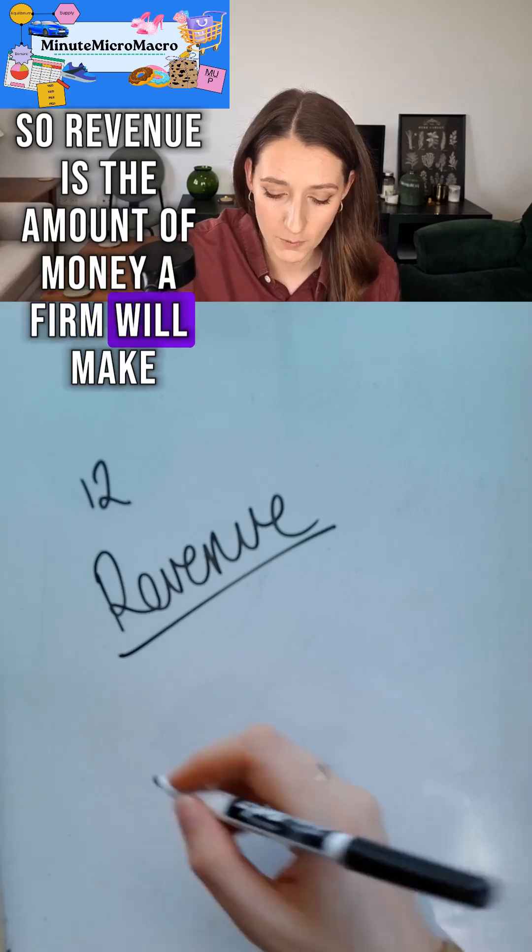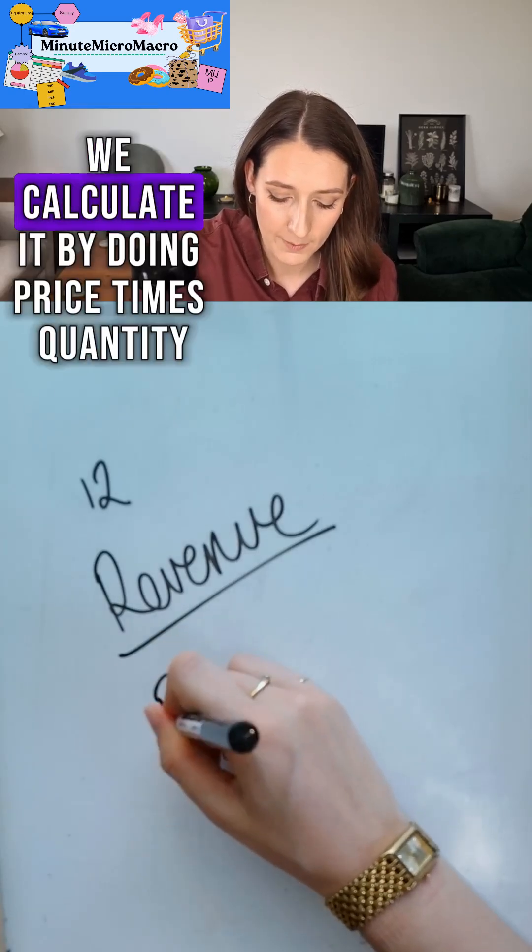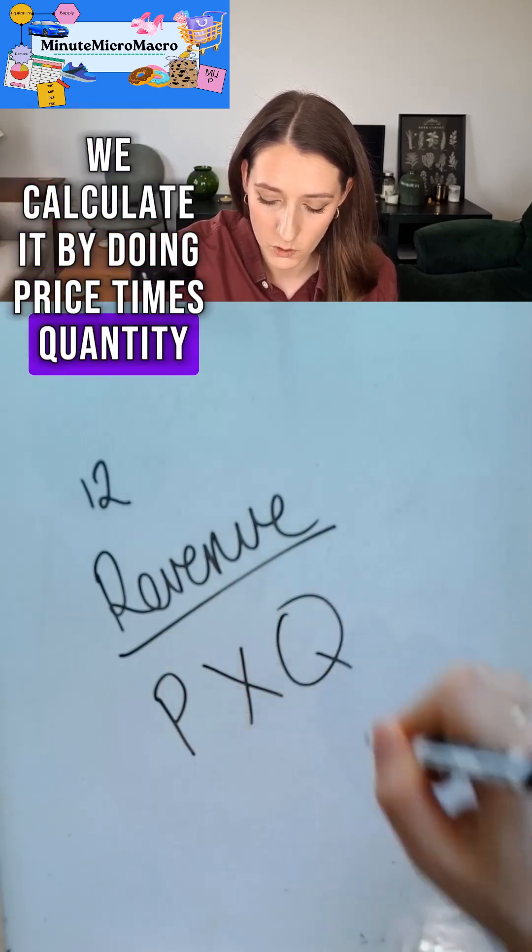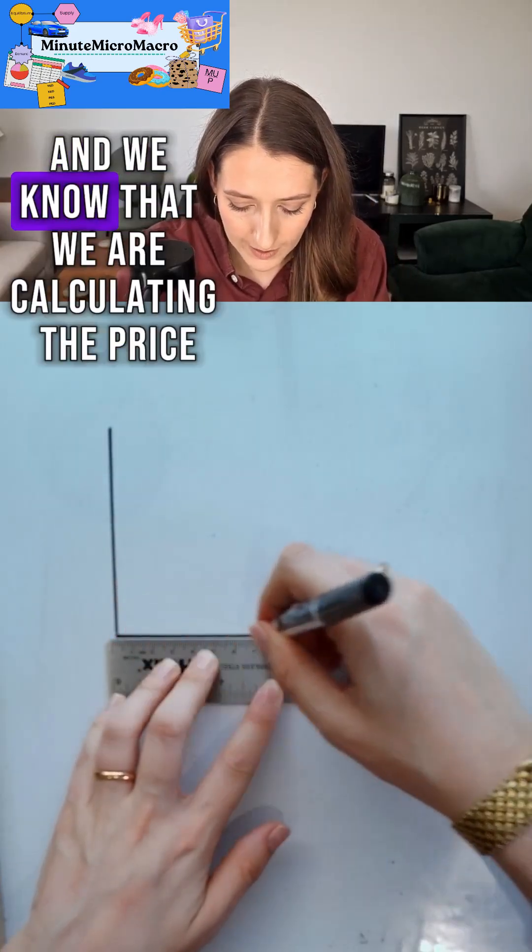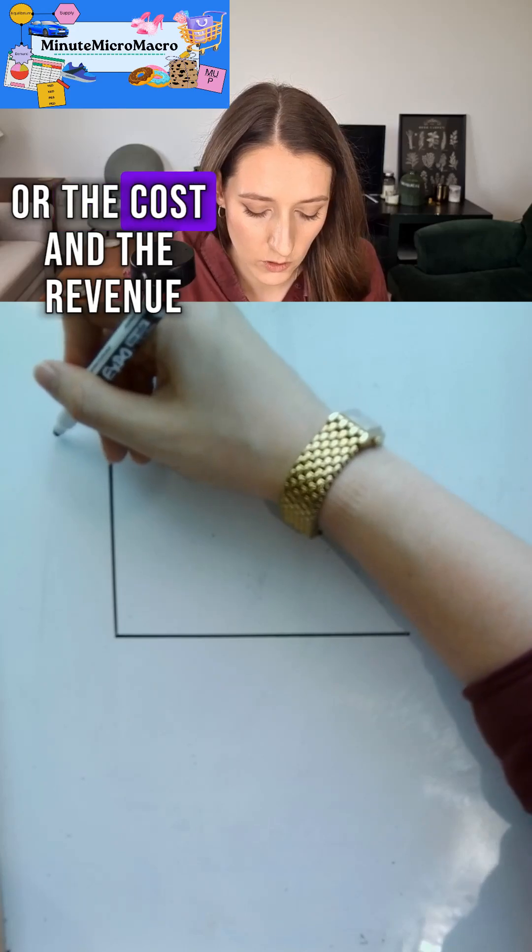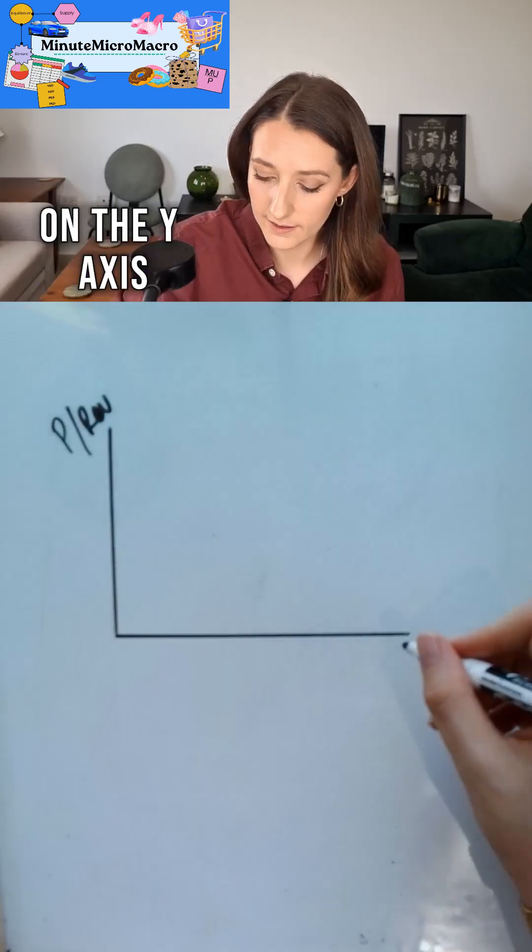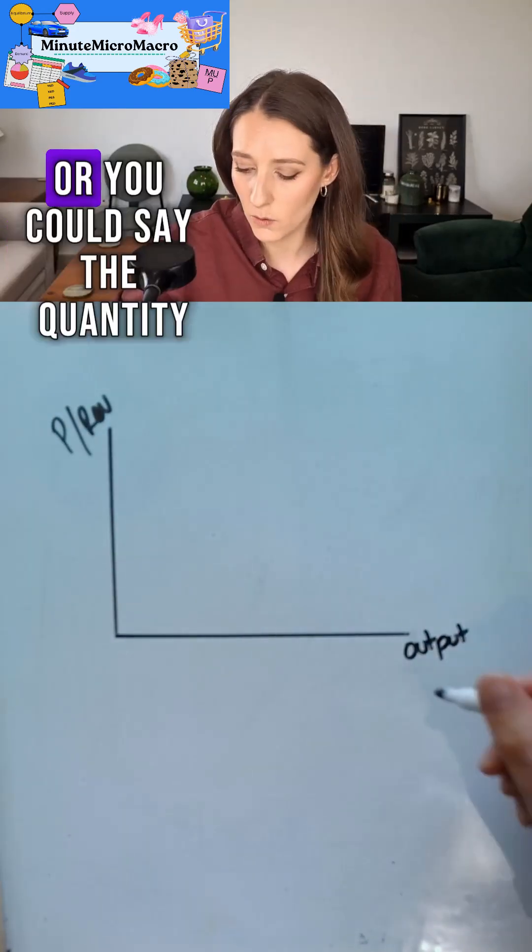Revenue is the amount of money a firm will make if everyone pays the same price and calculates it by doing price times quantity. We're going to draw our axes with a ruler and we know that we are calculating the price or the cost and the revenue on the y-axis and the output of the firm or the quantity on the x-axis.